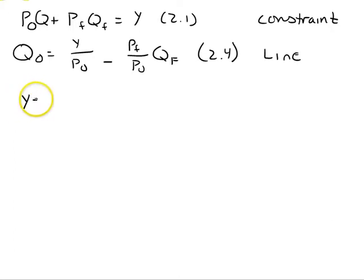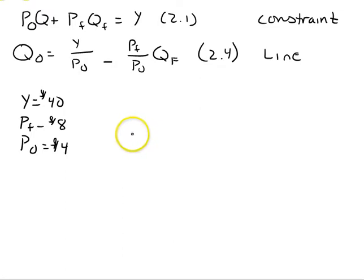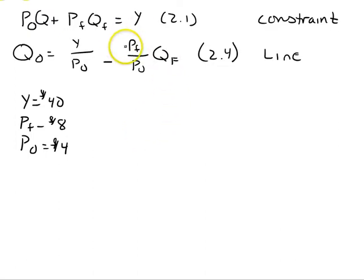We had some numbers to make this more concrete: income was equal to $40, the price of food was equal to $8, the price of other goods was equal to $4. We could find the y-intercept and also the maximum quantity of food if we purchased only food. Therefore, we could draw a budget line and find out the maximum quantity of food and all other goods the family could purchase if it exhausted its income.